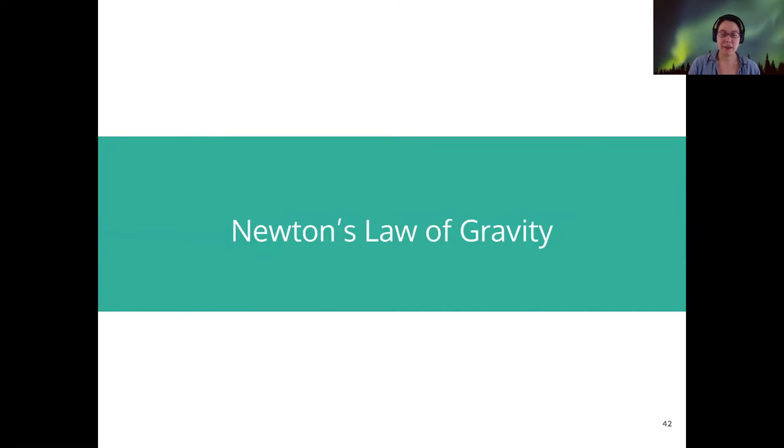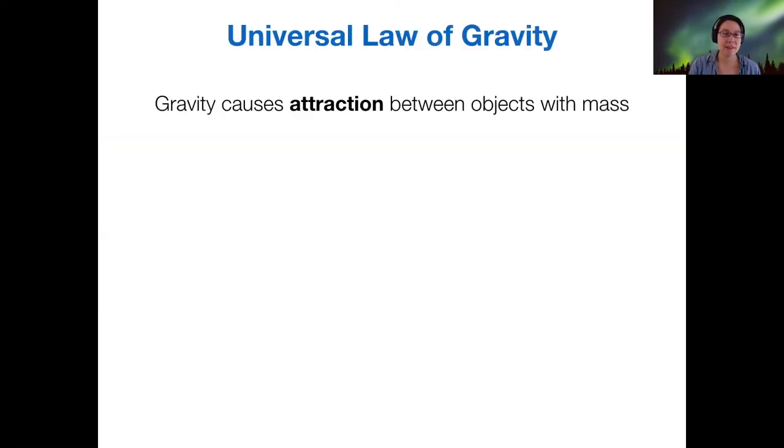So why is this law of gravity such a big deal? Because it's universal. Newton found that gravity is the reason for attraction between objects with mass. This wasn't obvious at all to ancient astronomers that the orbit of the moon around the earth was related to the same exact force that holds us to the earth, right? Newton was the one who actually connected those two ideas. That's why it's such a big deal.